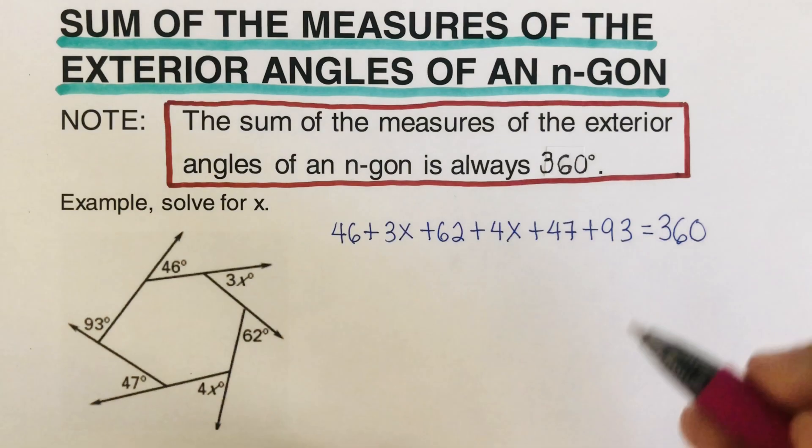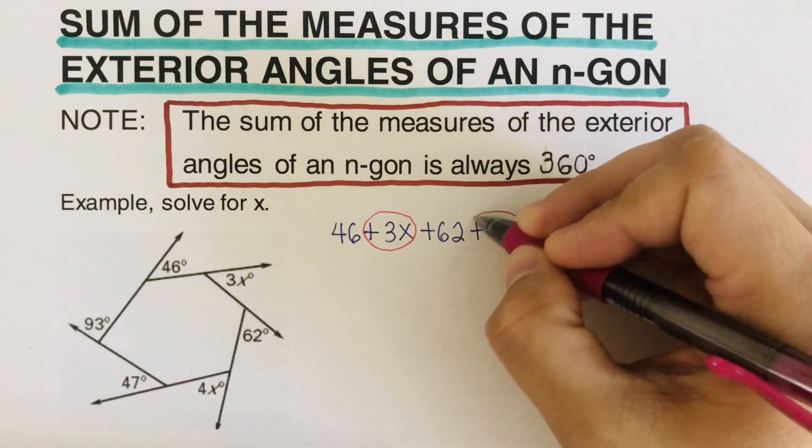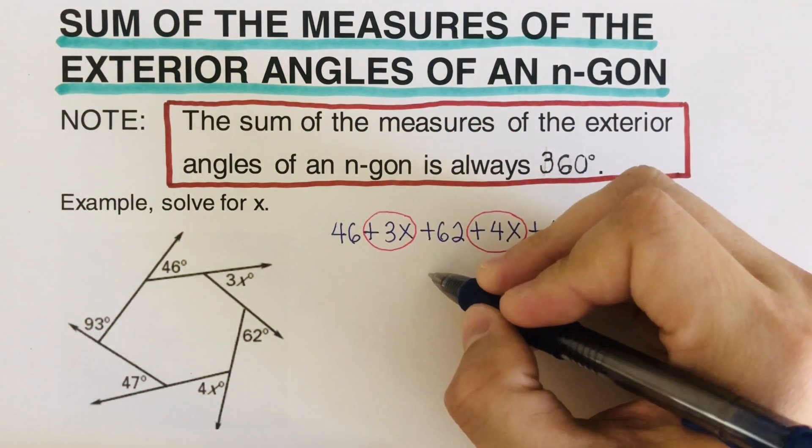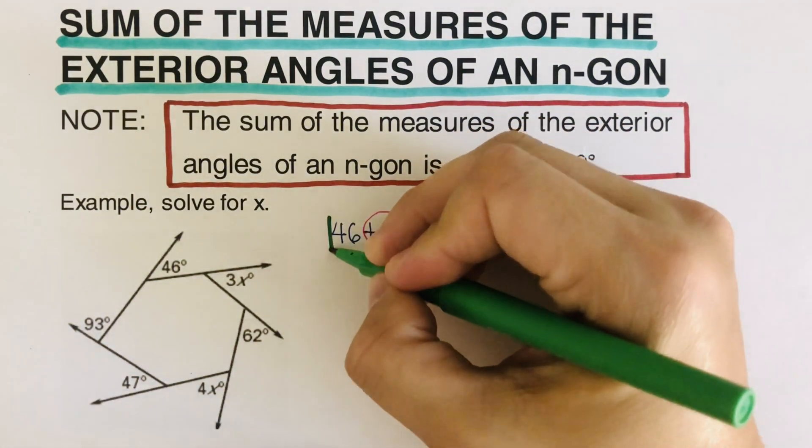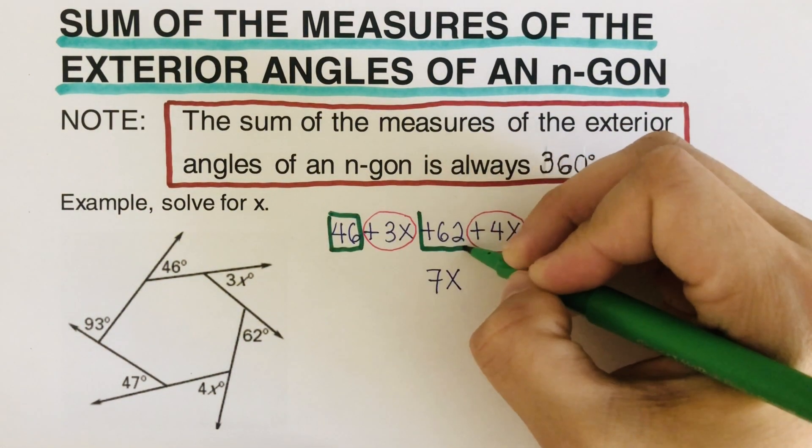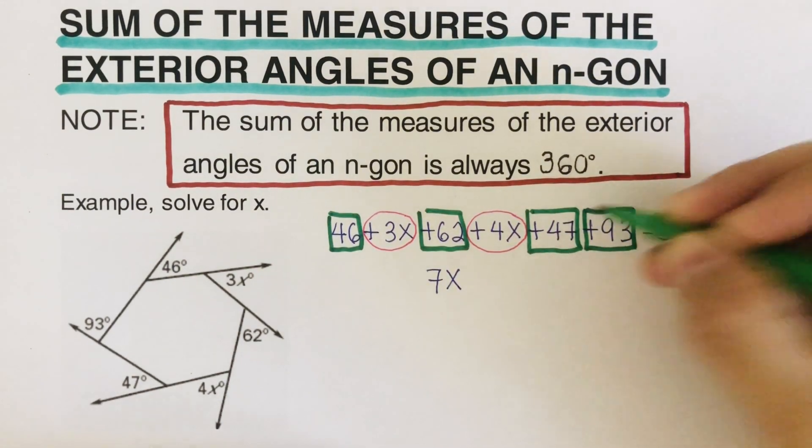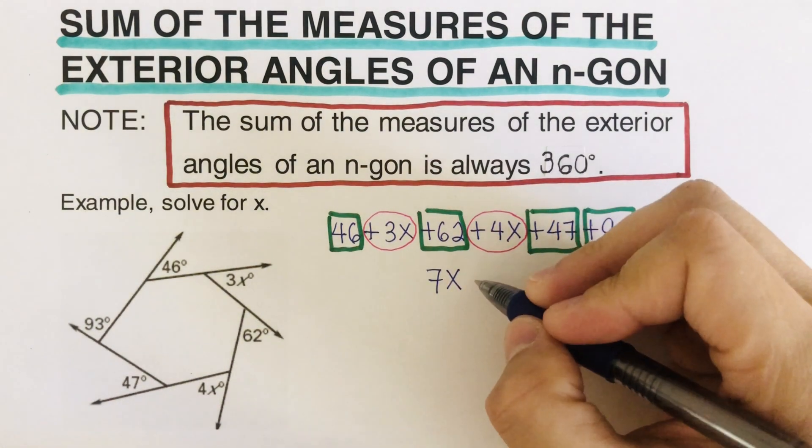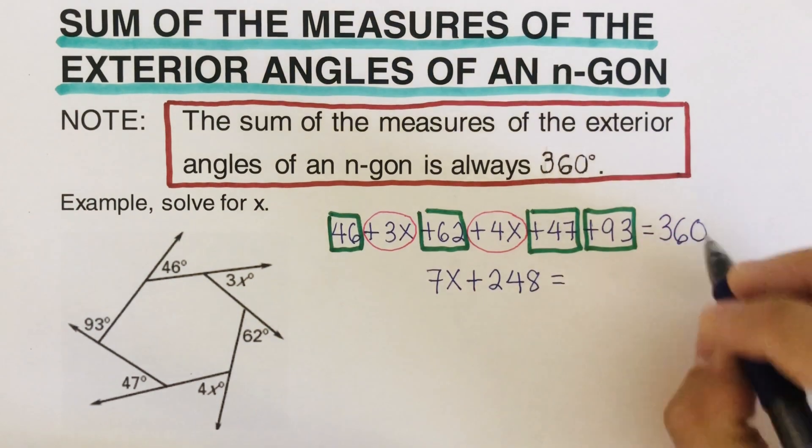This time around, we're going to combine like terms. We have 3x plus 4x equals 7x. And then we're going to add all the constants: 46 plus 62 plus 47 plus 93, which totals 248. So that would be 7x plus 248 equals 360.